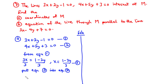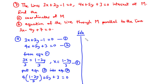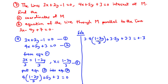Substituting equation 3 into equation 2 gives: 4 times (1 minus 2y)/3 plus 5y plus 3 equals 0. To eliminate the fraction, multiply every term by 3, giving 4(1 minus 2y) plus 15y plus 9 equals 0, which expands to 4 minus 8y plus 15y plus 9 equals 0.